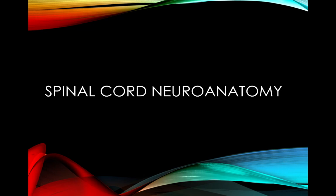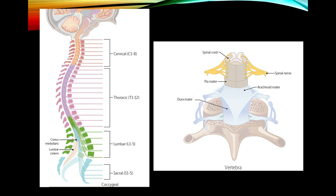In the next two lectures, we'll be going over spinal cord neuroanatomy, and then later we'll have a lecture emphasizing the clinical aspects. As a big picture, the spinal cord has cervical 1-8, thoracic 1-12, lumbar 1-5, and sacral segments. The conus medullaris usually ends around L1, sometimes T12. Nerve roots from lumbar and sacral levels travel downward to exit, and together they form the cauda equina.